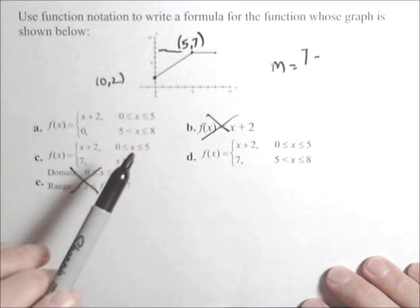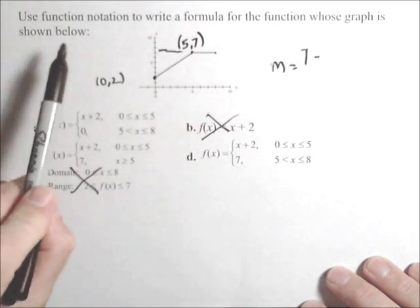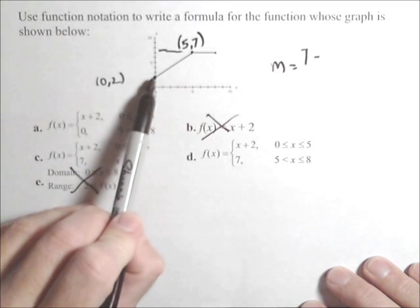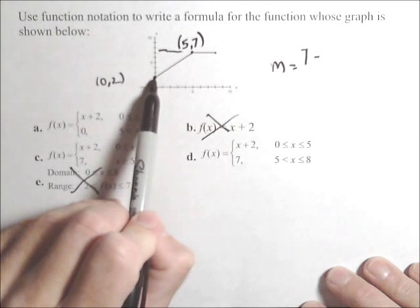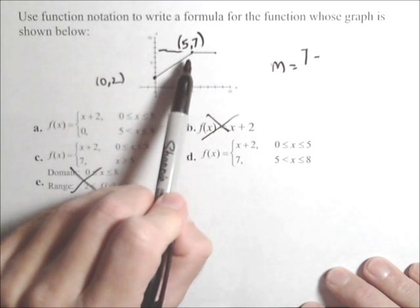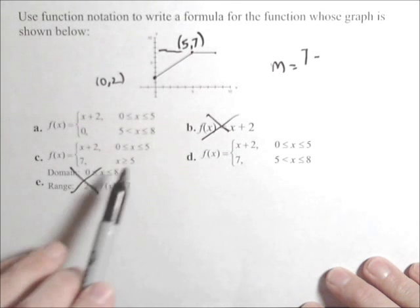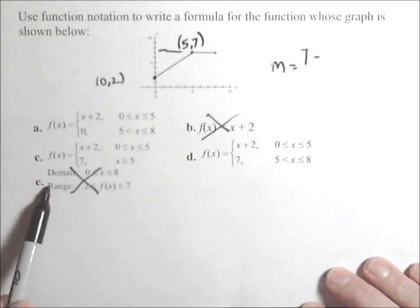So I've already kind of started on this one, but let's take a look at what's going on. We need to write a function for the graph below, and we see that it's two linear pieces, which is why it's going to be piecewise, which would allow us to eliminate B and E.